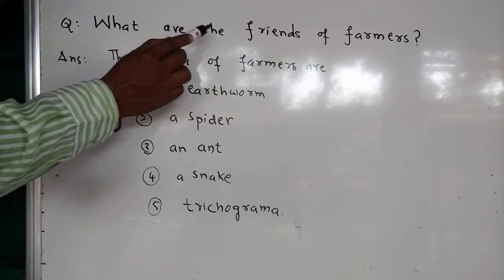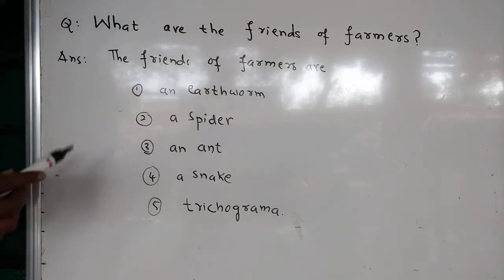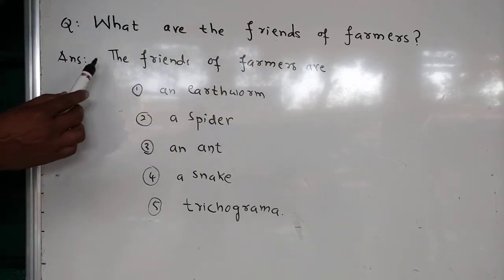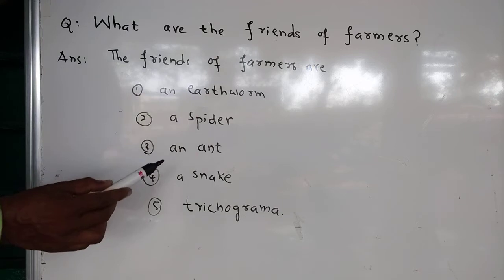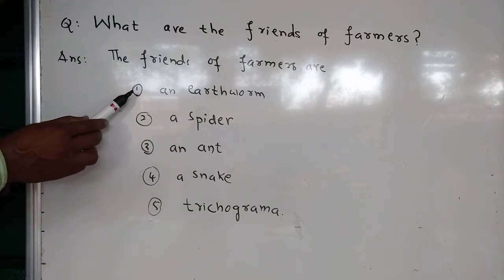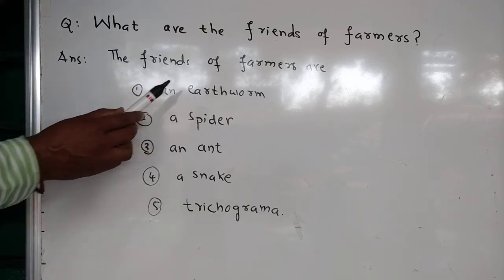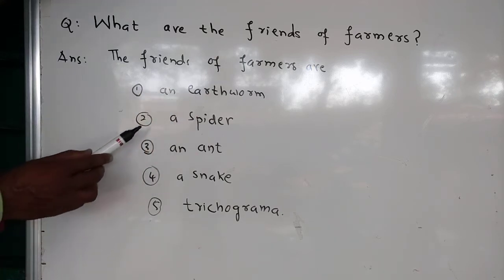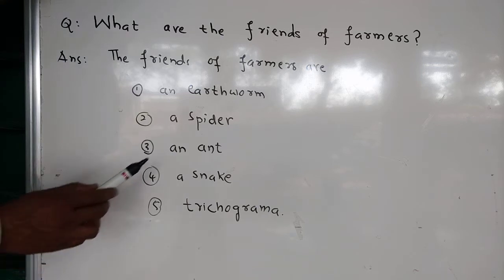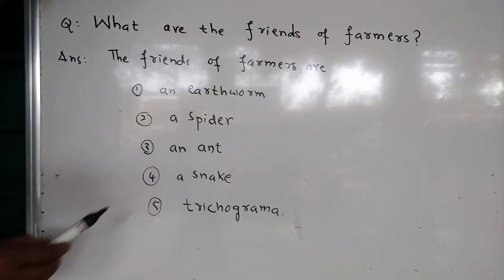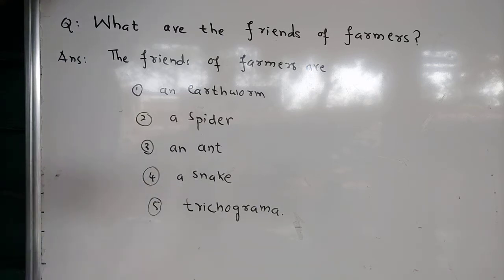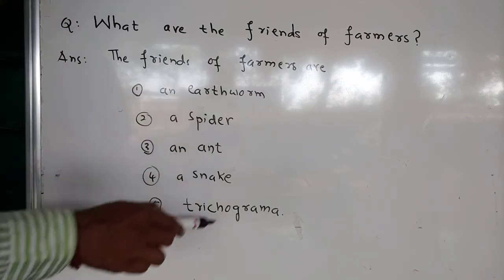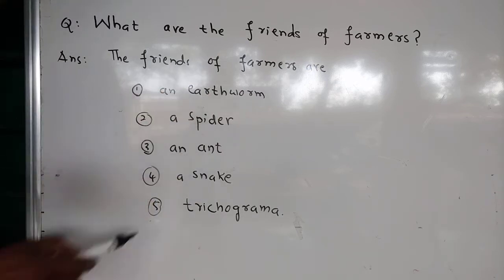The answer is the friends of farmers are: first, an earthworm; a spider; an ant; a snake; tychogramma. These are the friends of farmers.